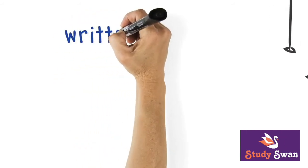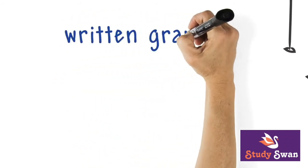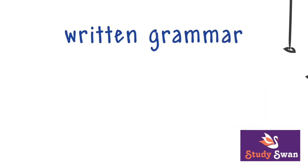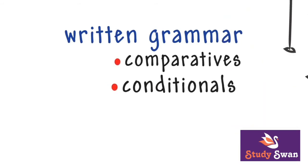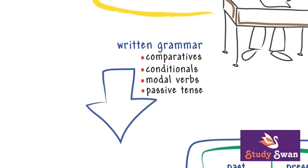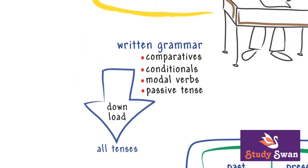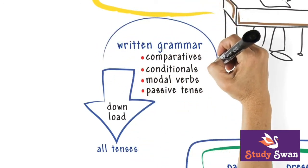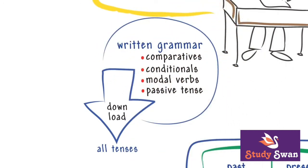Demonstrating a range of written grammar might also mean using some of these tenses: comparatives, conditionals, modal verbs, and the passive tense, especially for Task 1 process descriptions. Look for our Speaking and Grammar download for examples of all these tenses. It's important to learn and practice a variety of grammatical tenses.